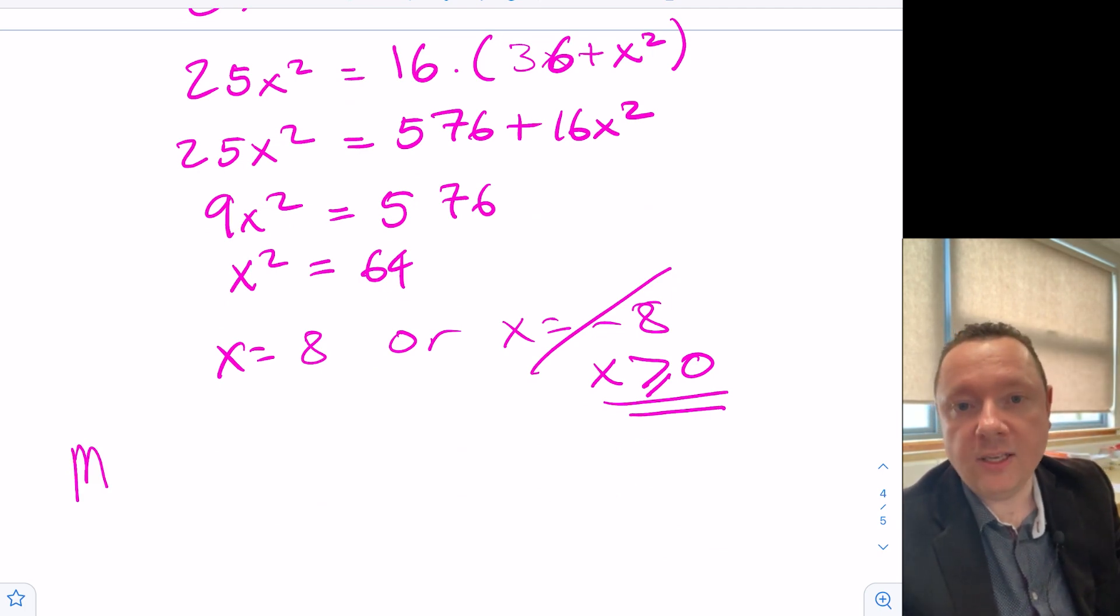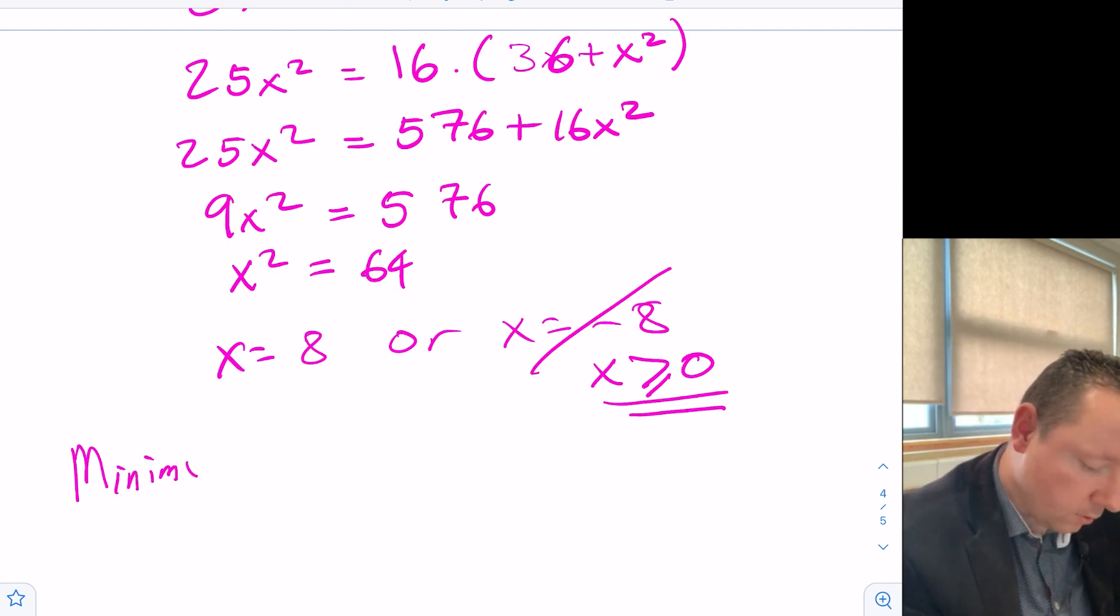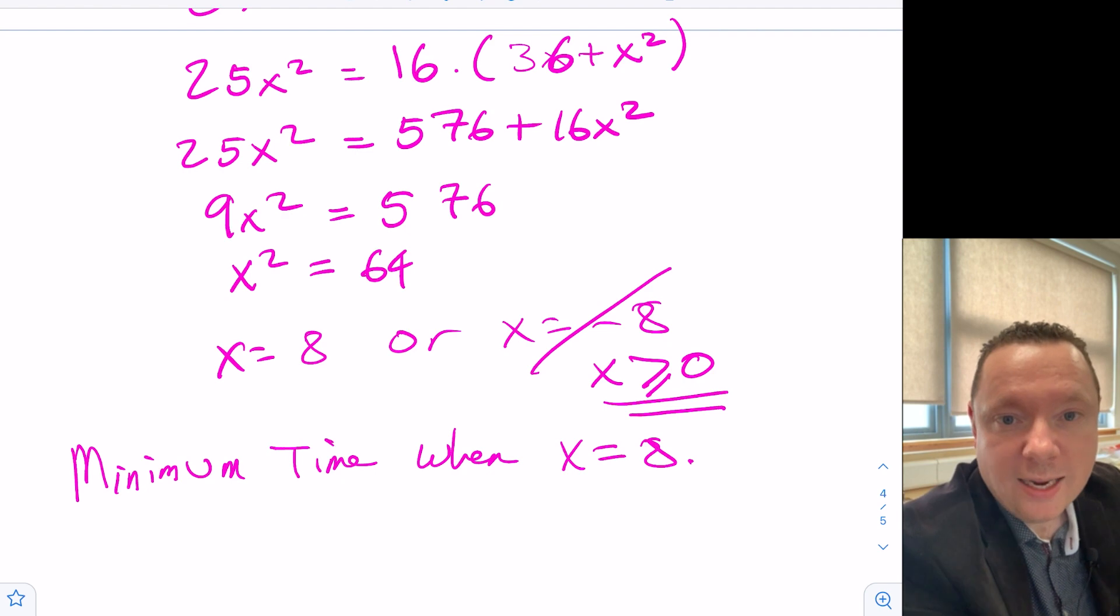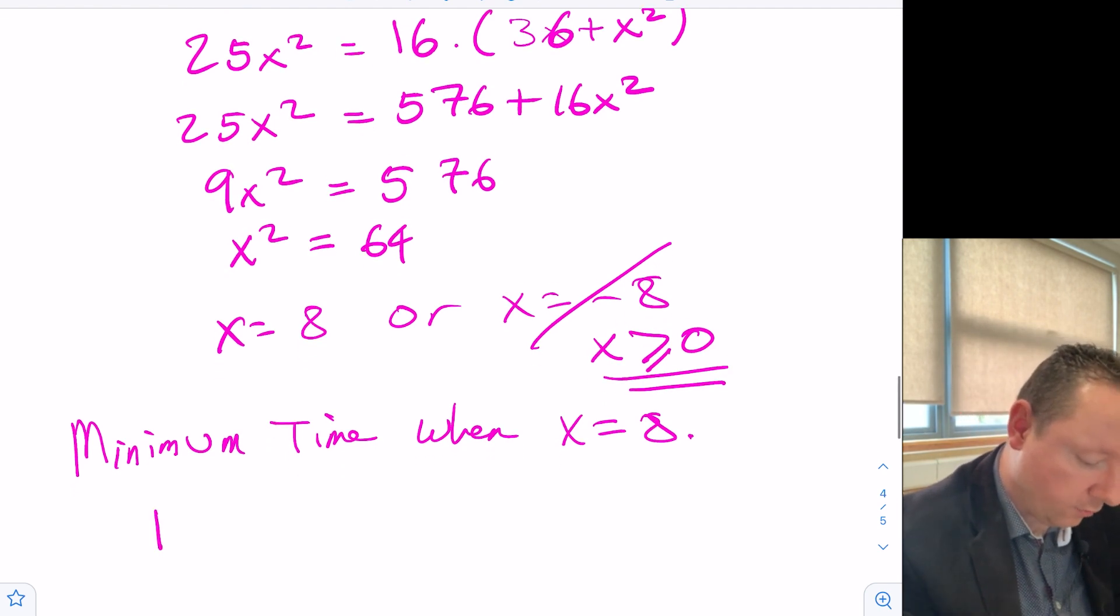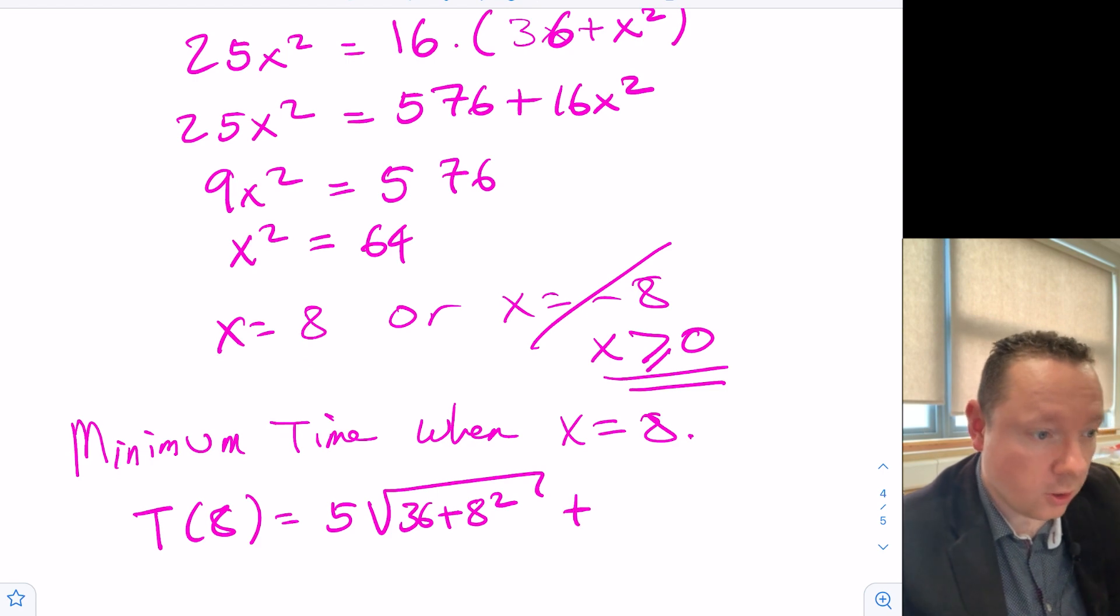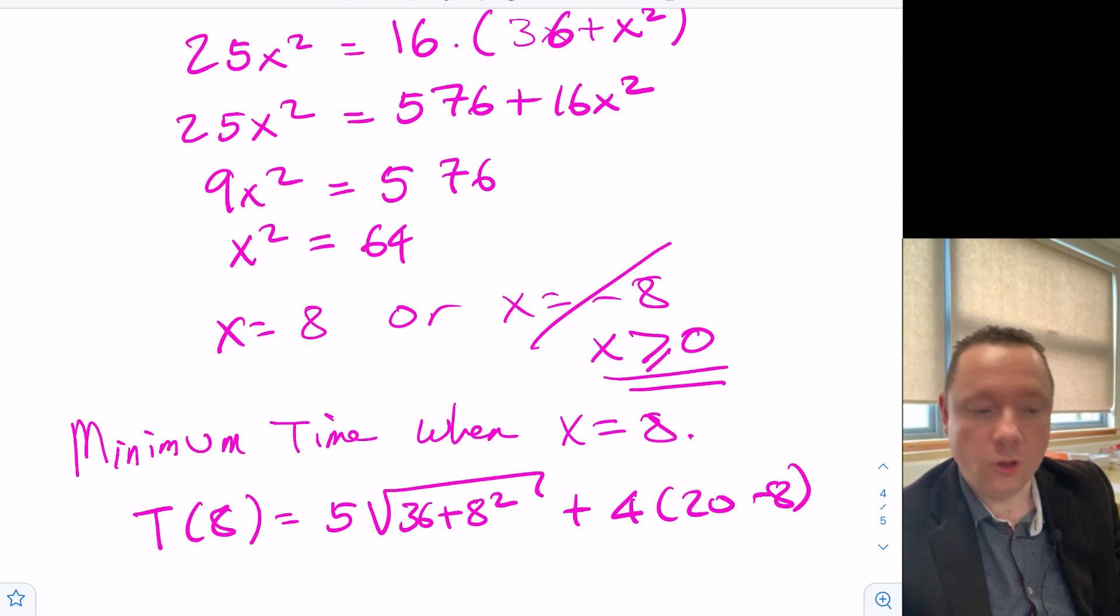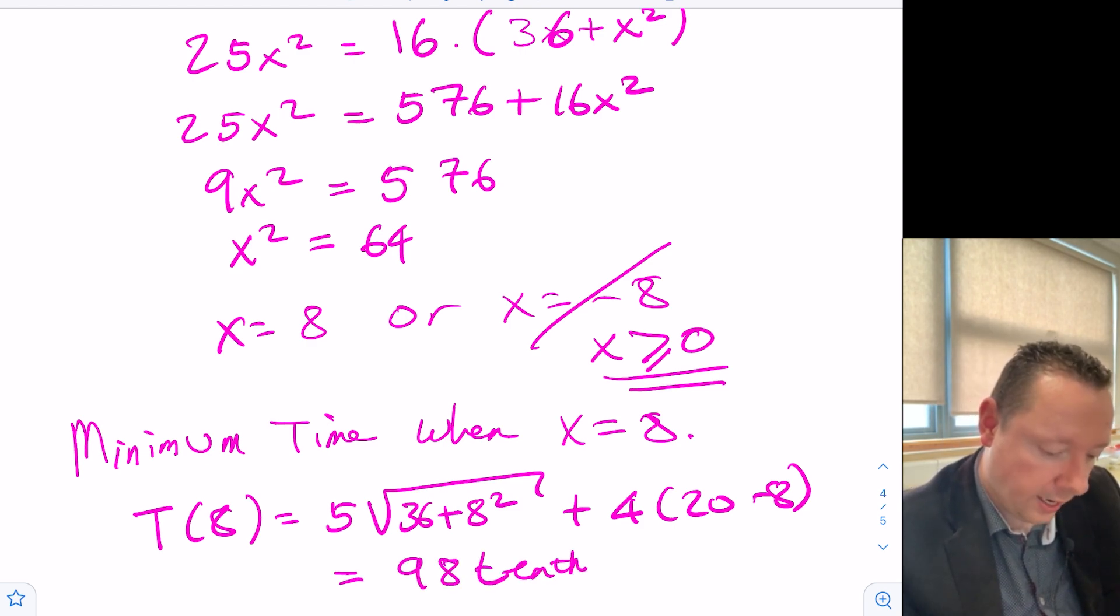There's no need for a nature table this one because we've already got, we know it's going to be a minimum. So minimum time when x equals 8. So we can then substitute that back into our t of x. So remember that will give us t of 8 equals 5 times the square root of 36 plus 8 squared plus 4 times 20 minus 8. And if you were to work that out using a calculator, you would get 98 tenths of a second.